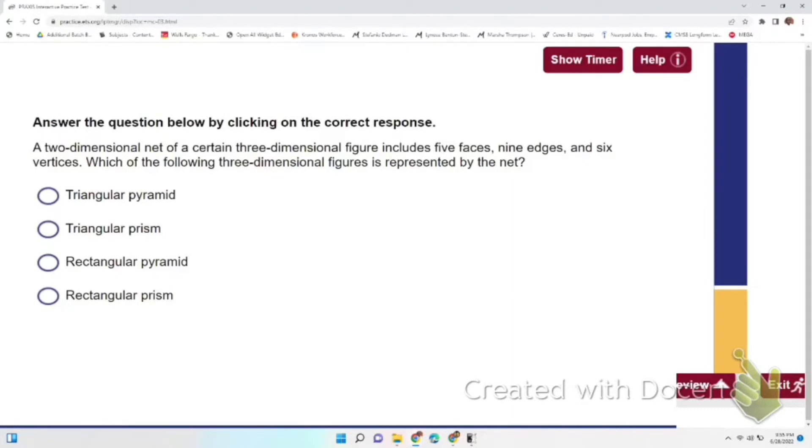Number three: the two-dimensional net of a certain three-dimensional figure includes five faces, nine edges, and six vertices. Which of the following three-dimensional figures is represented by the net?